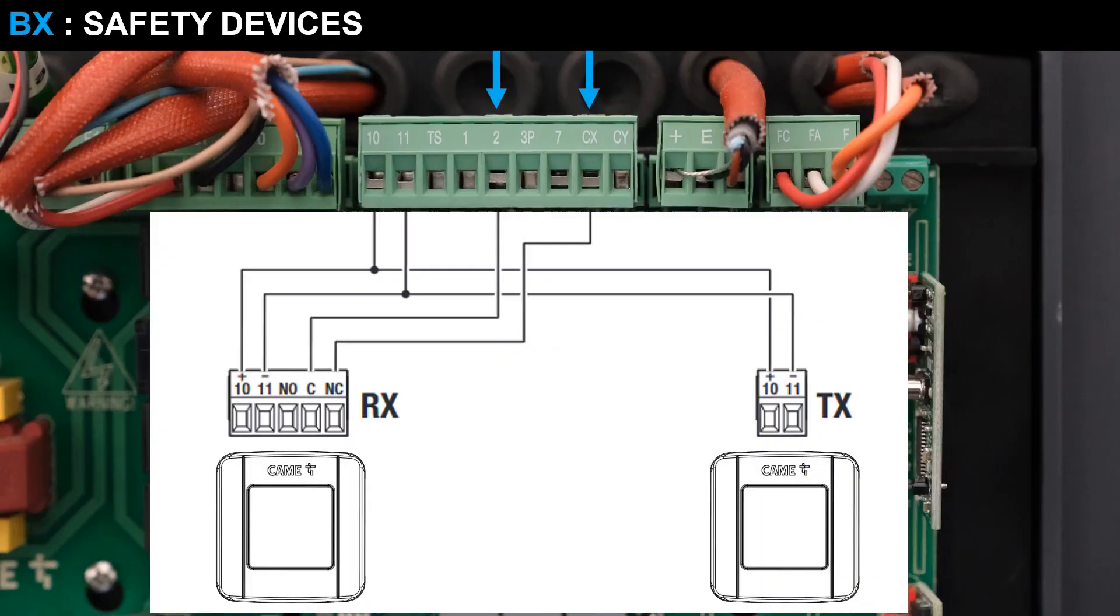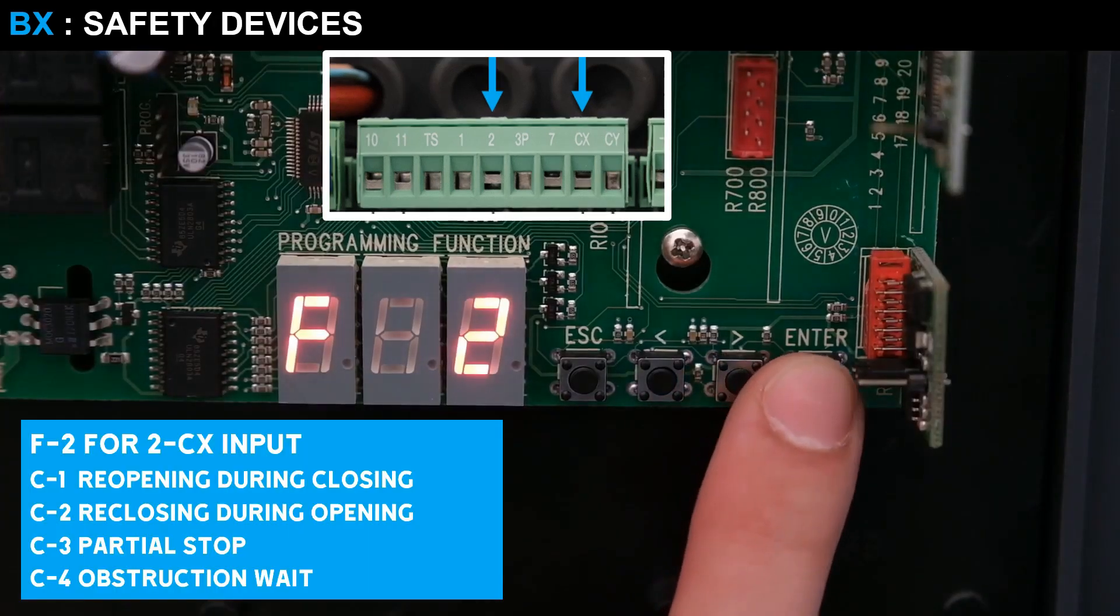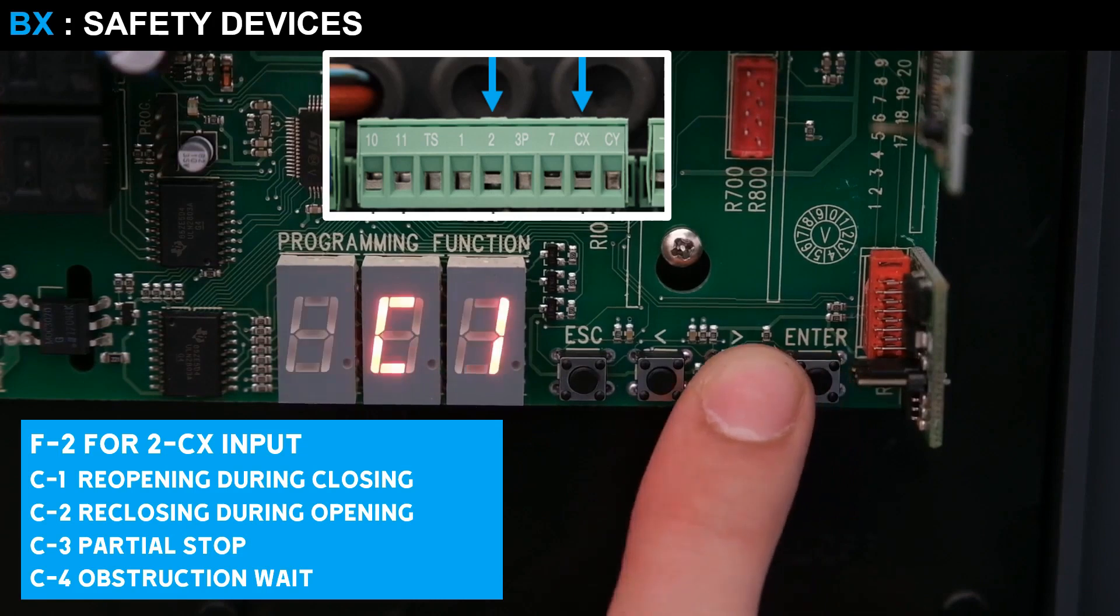To configure safety devices such as a pair of photocells, they must first be connected to terminals 2 and CX. Subsequently, enable them through function F2. Choose the function you want to associate.